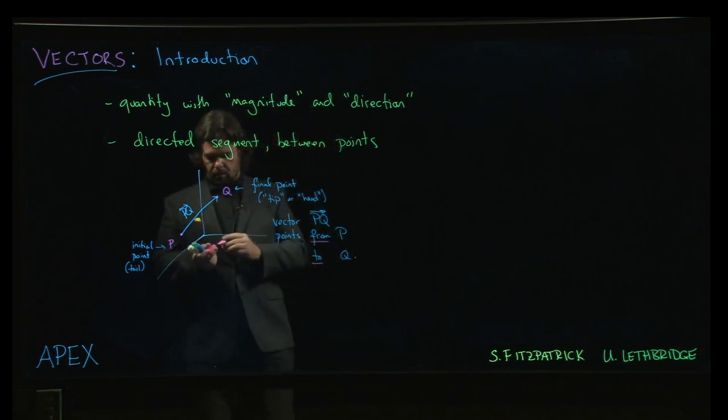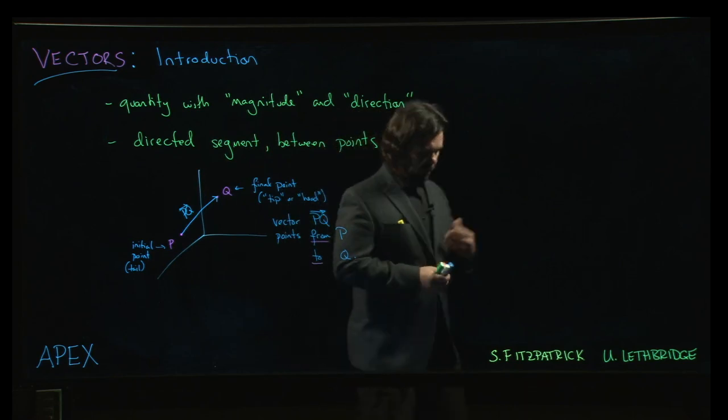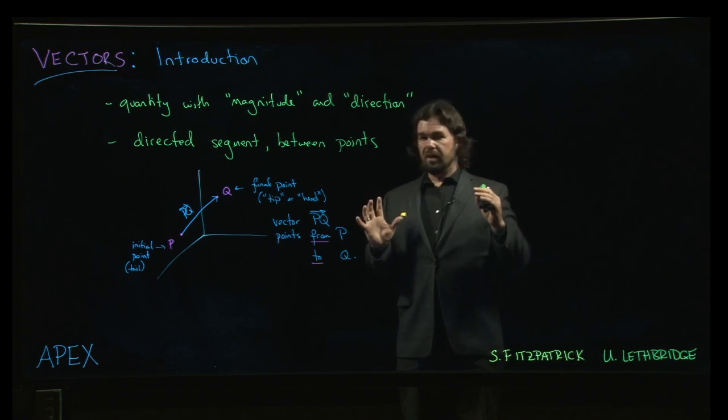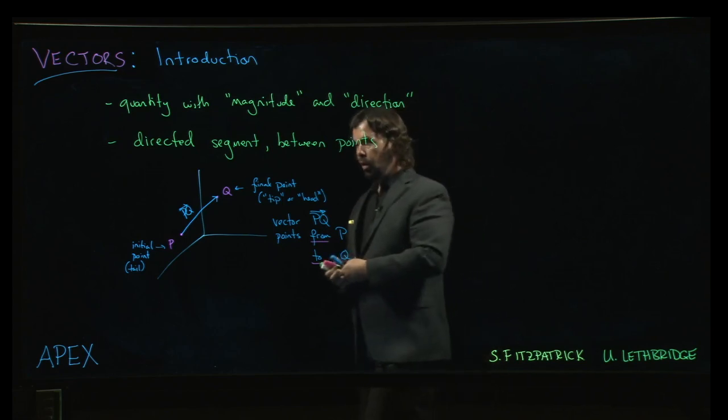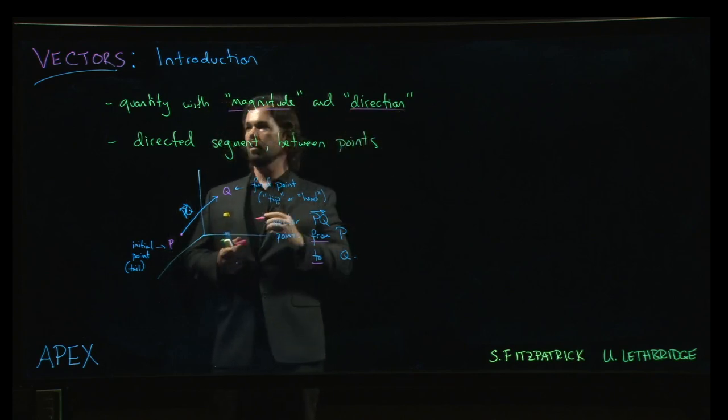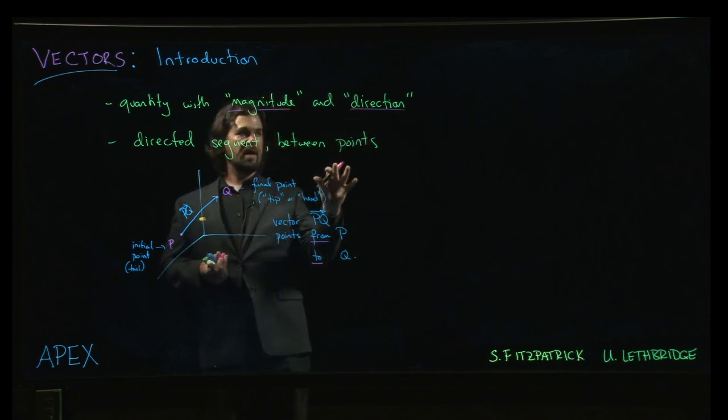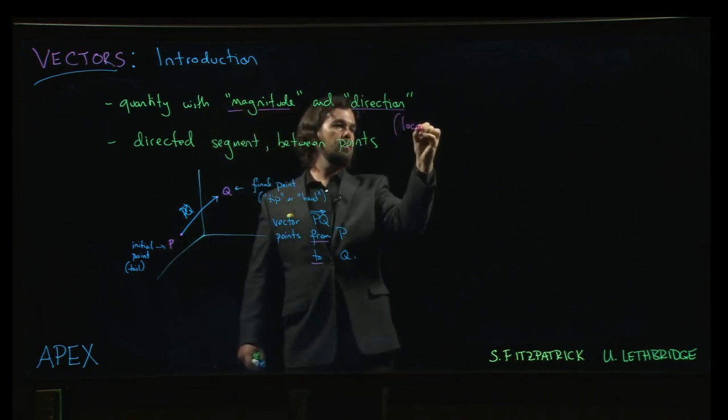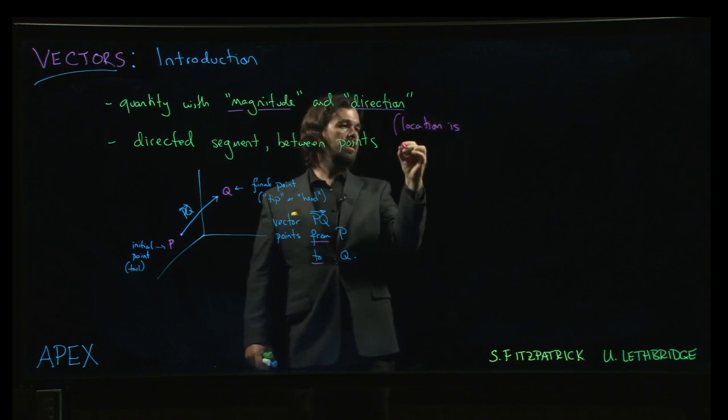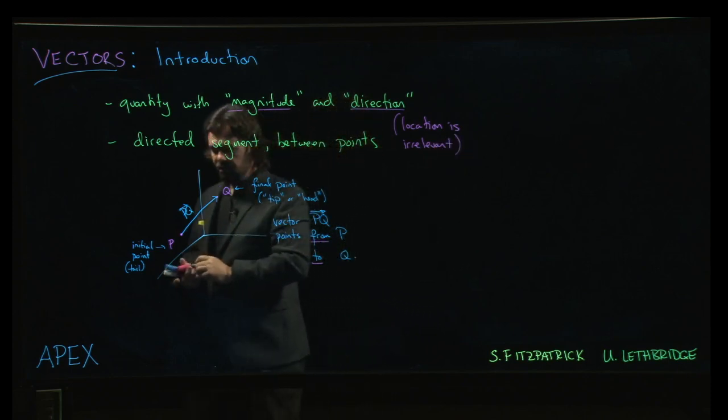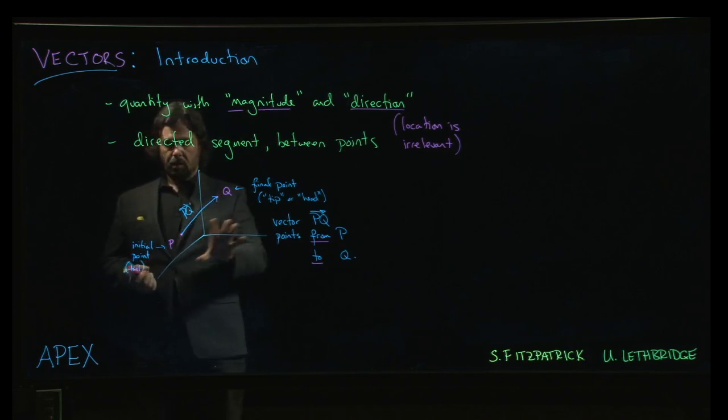Now one of the other conventions that we adopt, and again this is a common physics convention, is that these quantities here, the magnitude and the direction, these are somehow the only things that we really care about. We care about magnitude, we care about direction, location is in some sense irrelevant. Well maybe not irrelevant but we want to give ourselves the freedom to kind of anchor the vector wherever we want.